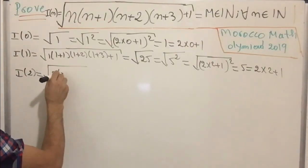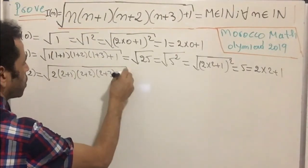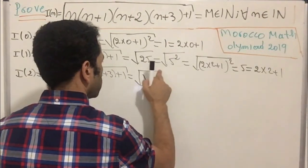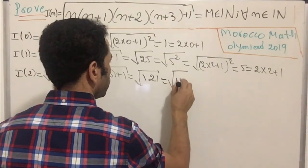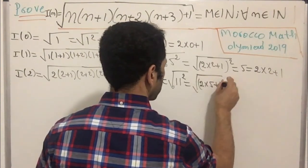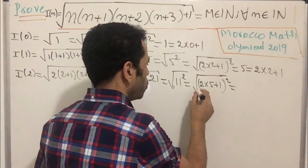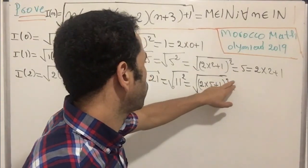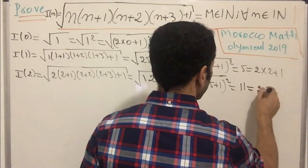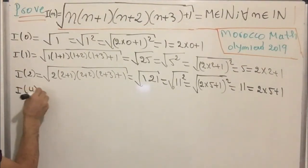Moving on to the third term, i(2): plugging in 2 gives us 2×3×4×5 plus one, which equals 121. That is 11², and can be rewritten as (2·5+1)². The square root is simplified by the square, so i(2) equals 11, or 2·5+1.